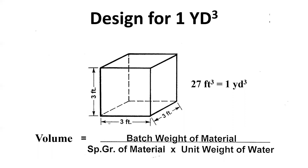There is a volume calculation: the batched weights of the material divided by the specific gravity of that material times the unit weight of water. If you want to convert from volume to weight or weight to volume, you use the specific gravity of that material times the unit weight of water, which is 62.4 — that's typically how you do it.